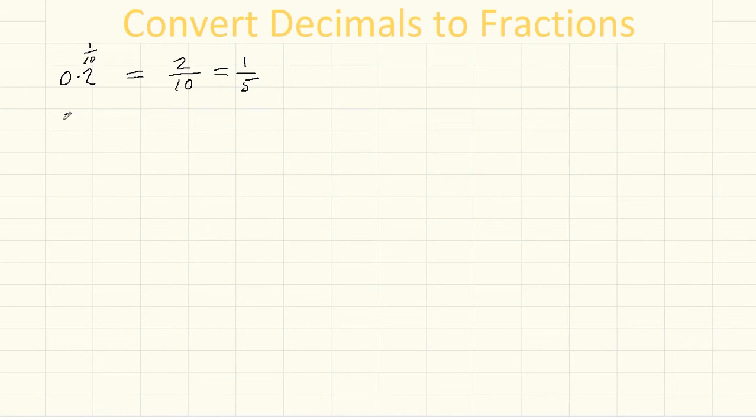Let's try another one, 0.3. Again, this is the tenths column, so this equals 3 tenths, and this one we can't simplify anymore.